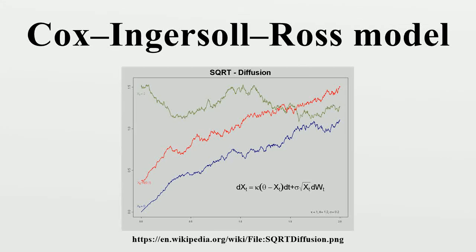In mathematical finance, the Cox-Ingersoll-Ross model describes the evolution of interest rates. It is a type of one-factor model, as it describes interest rate movements as driven by only one source of market risk. The model can be used in the valuation of interest rate derivatives.